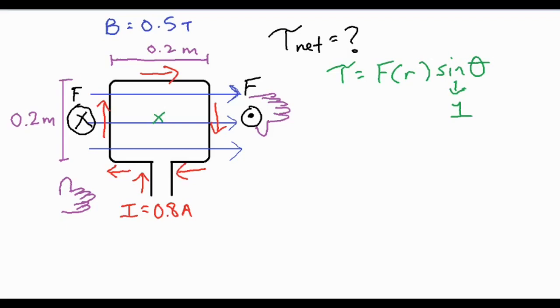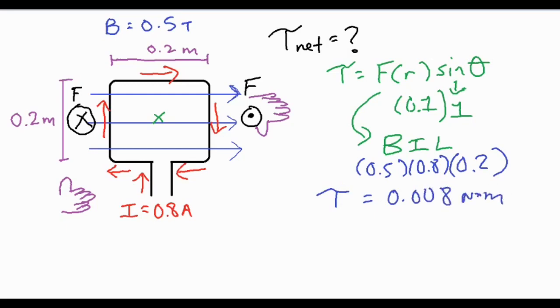Now as for our force, we're going to have to use a formula which is BIL: the magnetic field times the current times the length of the wire. We have the magnetic field which is equal to 0.5 teslas, we have the current of 0.8, and then we have the length of the wire for each side of those loops which is 0.2 meters. So if we take the product of each of these three and then multiply it by our 0.1 for our lever arm, we have a torque of 0.008 newton meters.